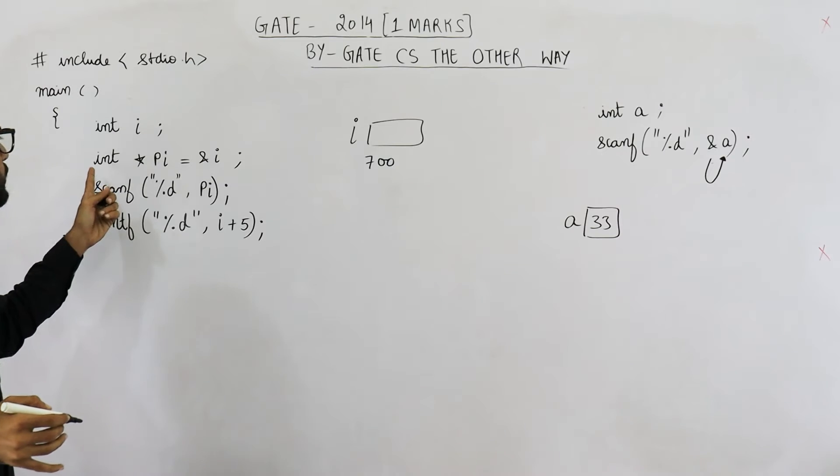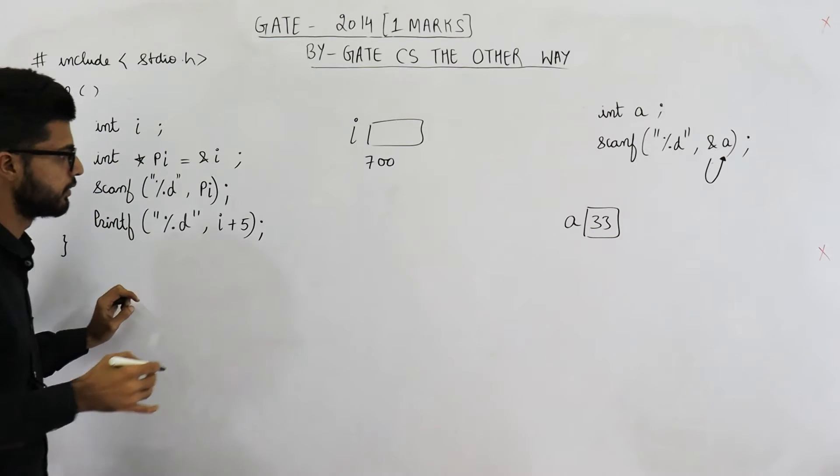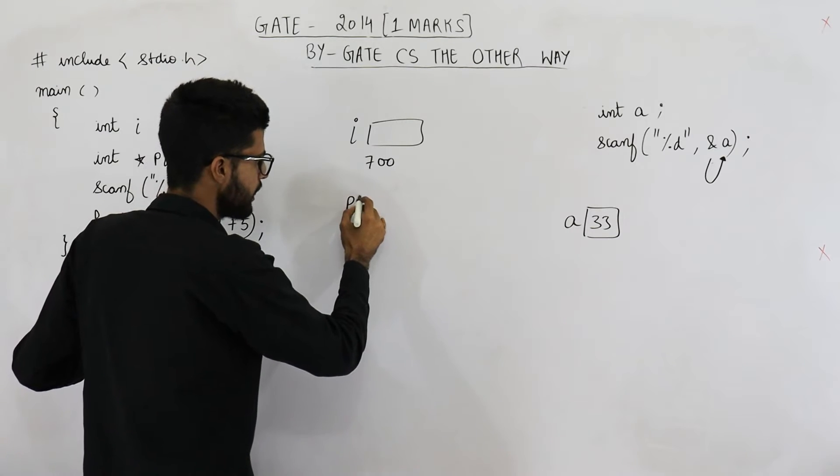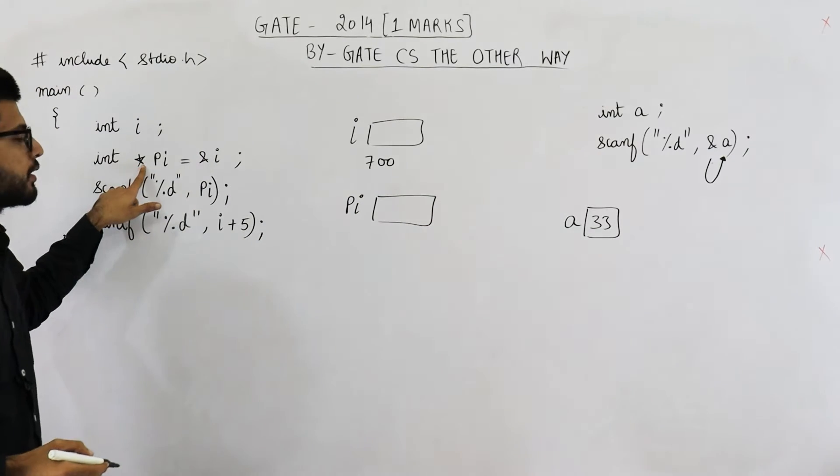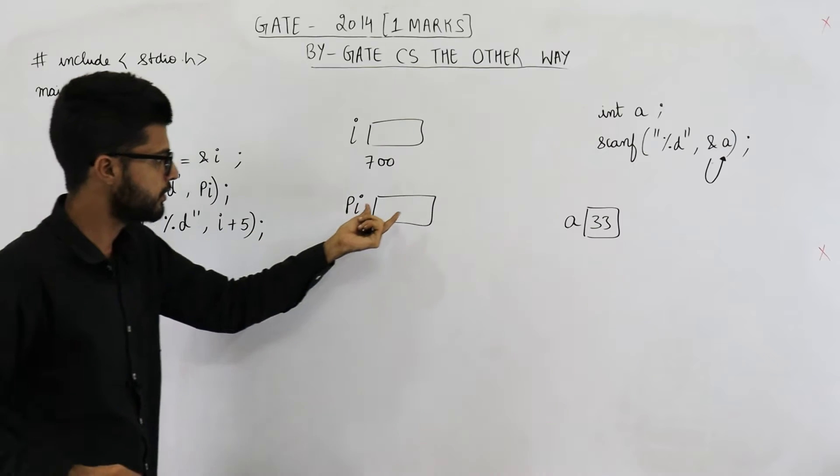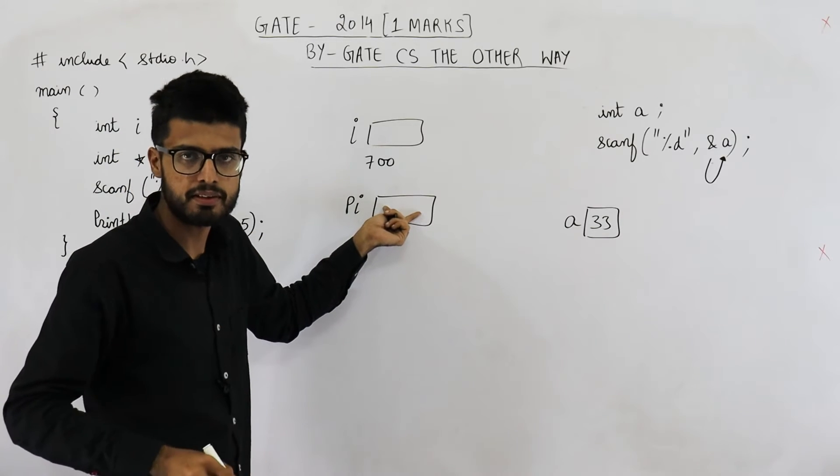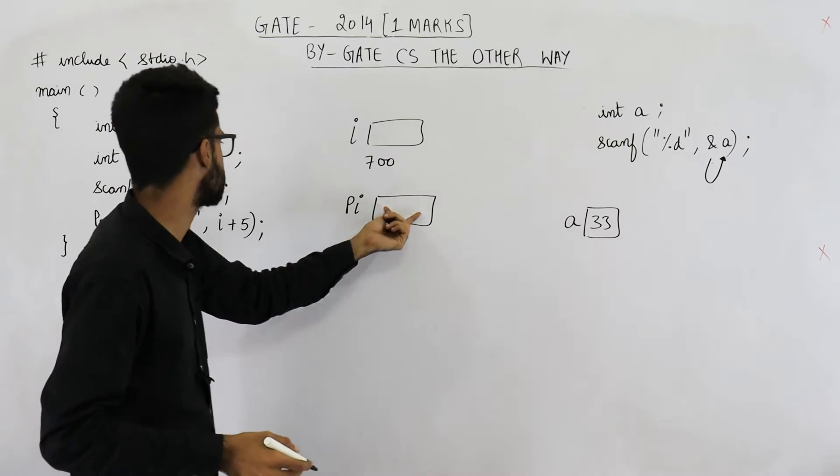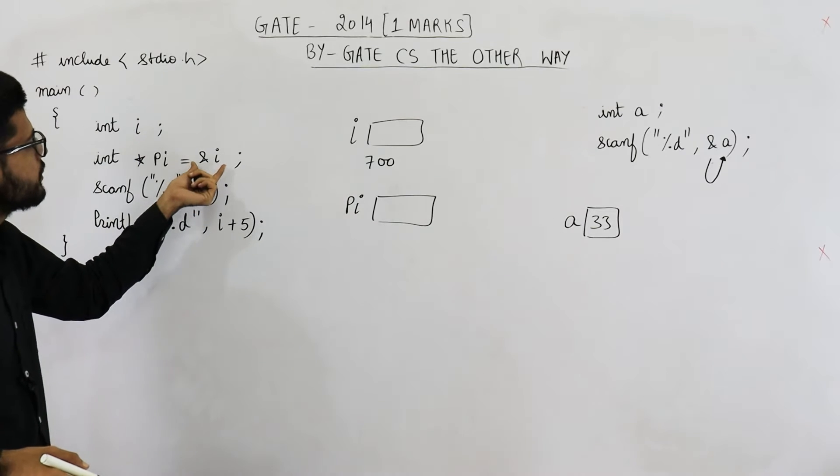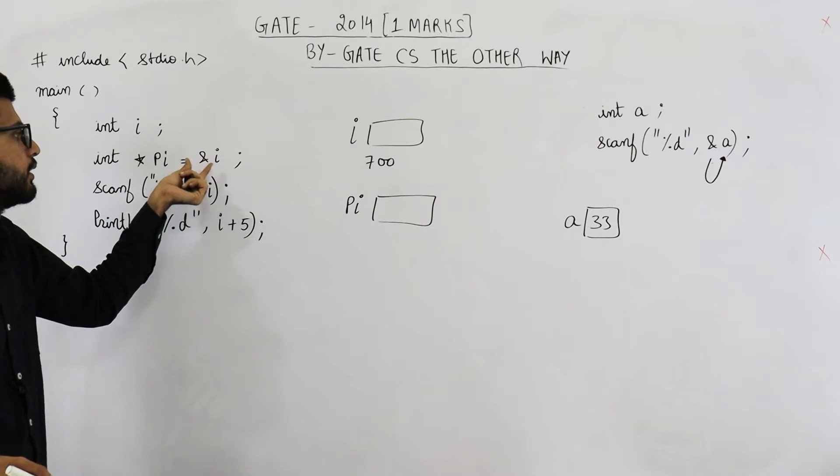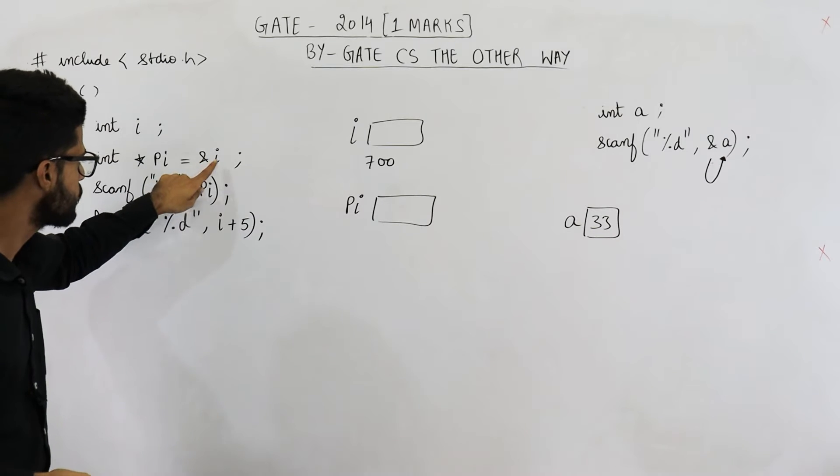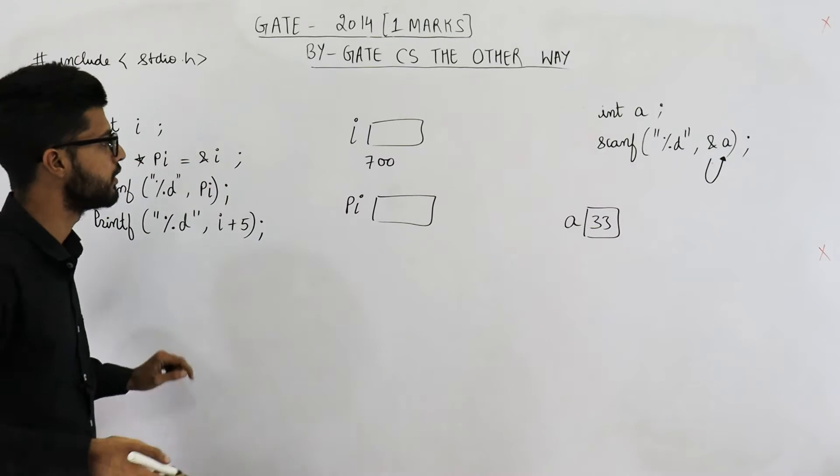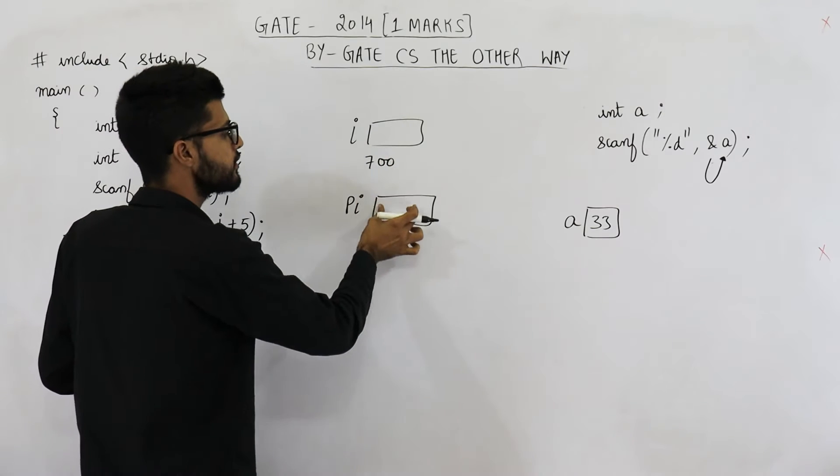Then in the next line you have written int *pi. So a variable called pi is declared. pi is a pointer to integer. That means this variable can contain only addresses, that too addresses of integers. And we are initializing it with &i. & means the address of operator. So the address of i is saved in pi. That means 700 is saved in pi.